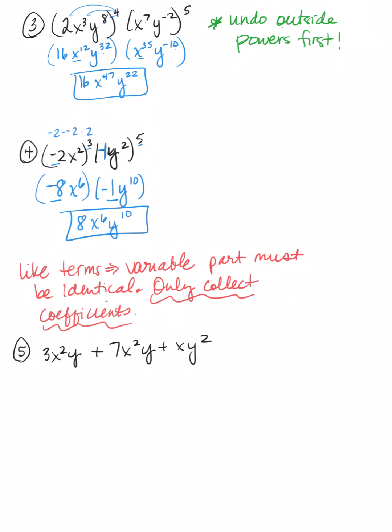Okay, so something to be aware of. You have to have like terms to be able to collect them. And to be like terms, the variable part has to be identical. All right? Identical. And then you would collect your coefficients. Okay? You can't combine them if they're not identical. So, if I look at this. Look at number 5 here. x squared y, x squared y, x y squared. This is not identical to these. Right? So, I can't combine this guy with the others. Well, I can combine these two because the variables are identical. So, when I give my answer on this one, I would just collect the first two. So, 10x squared y plus xy squared. I have to leave it just like that.